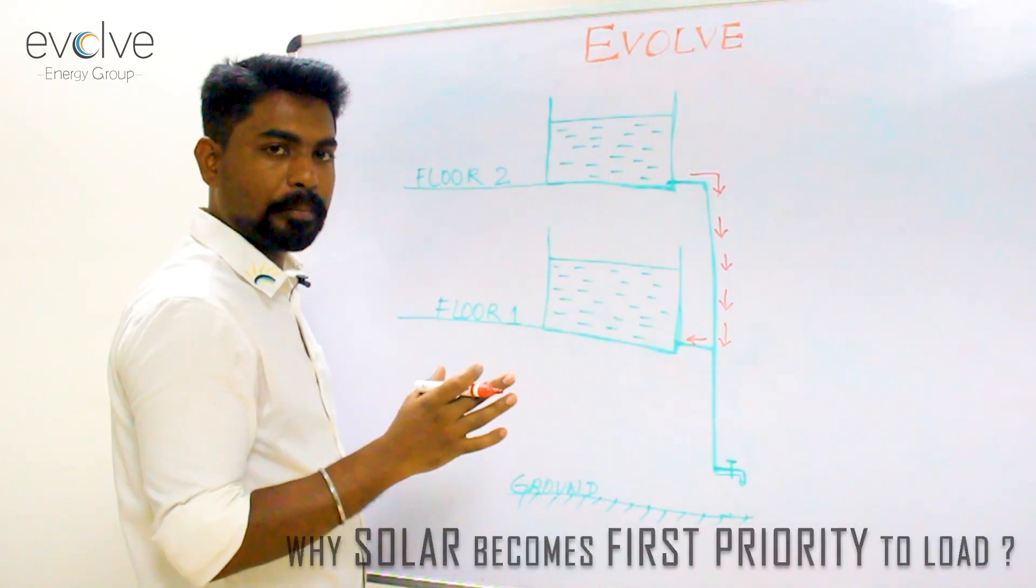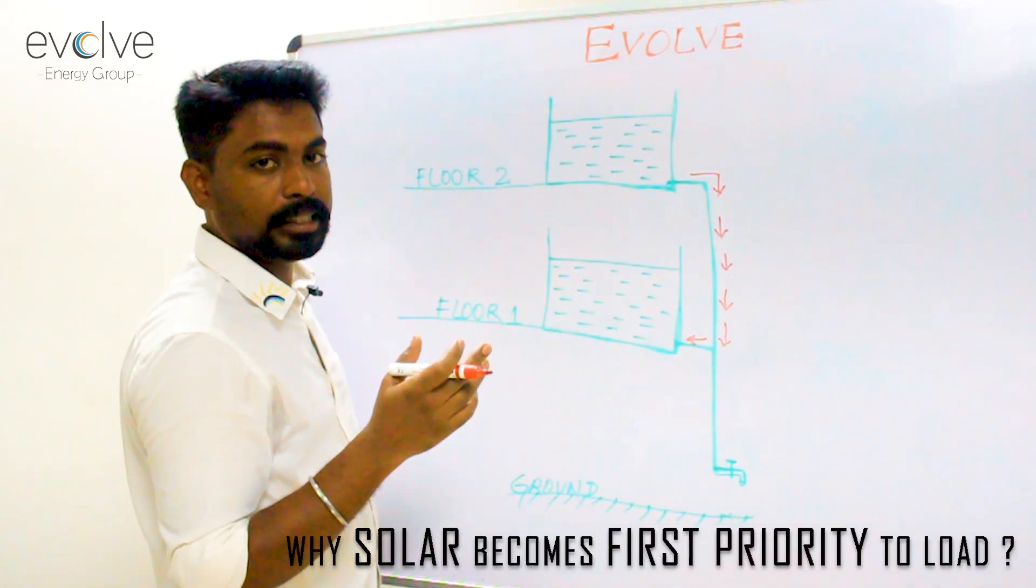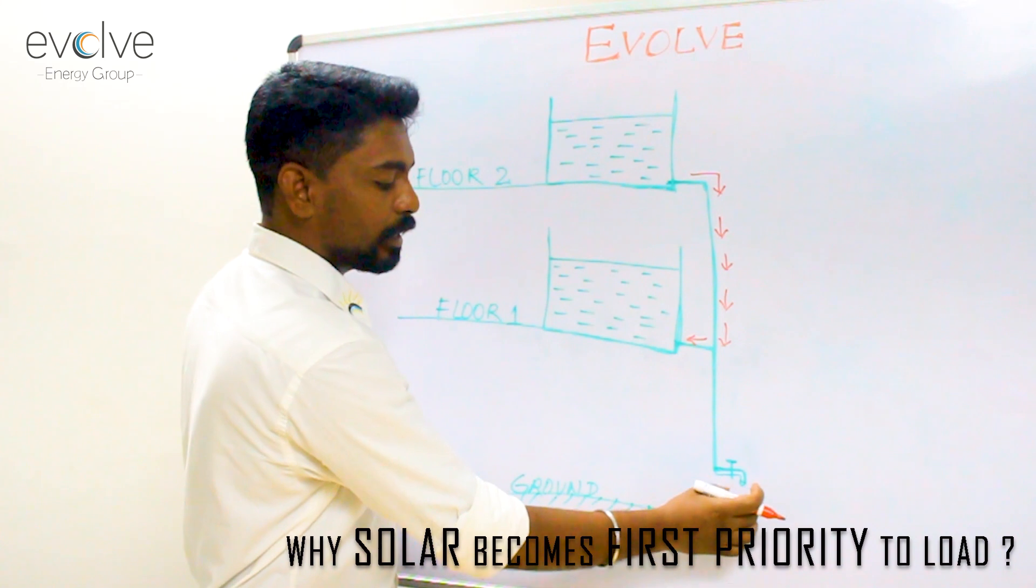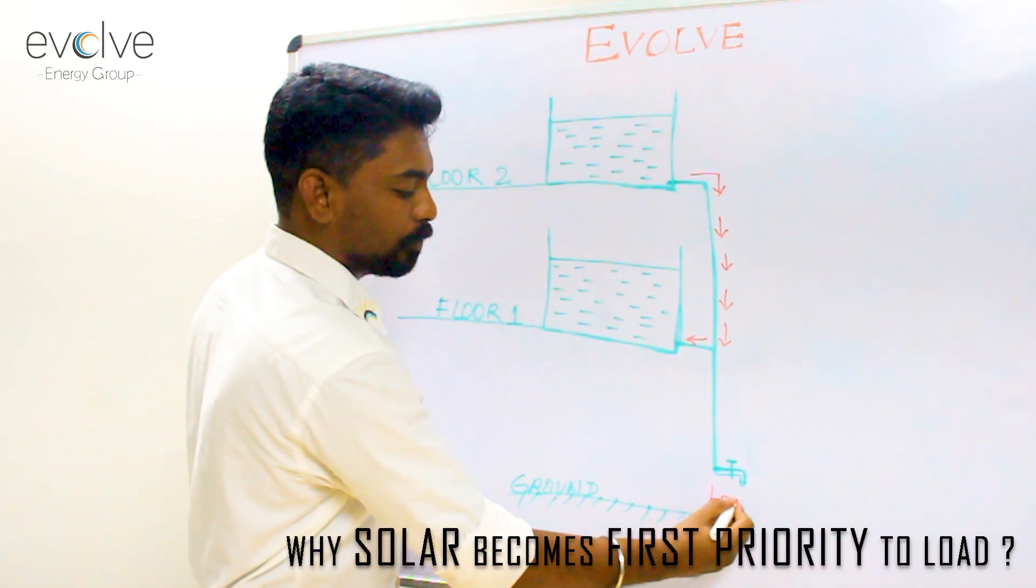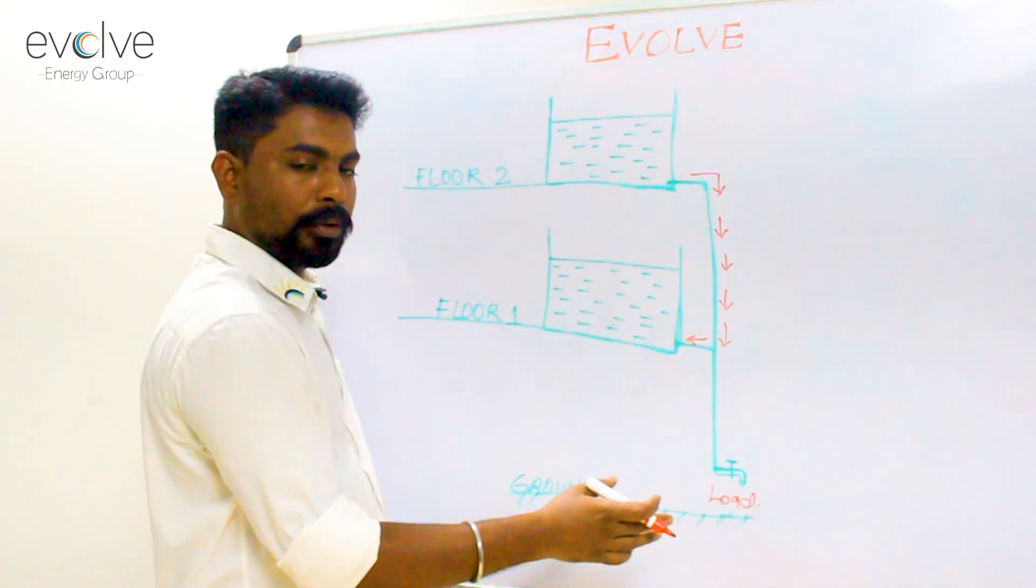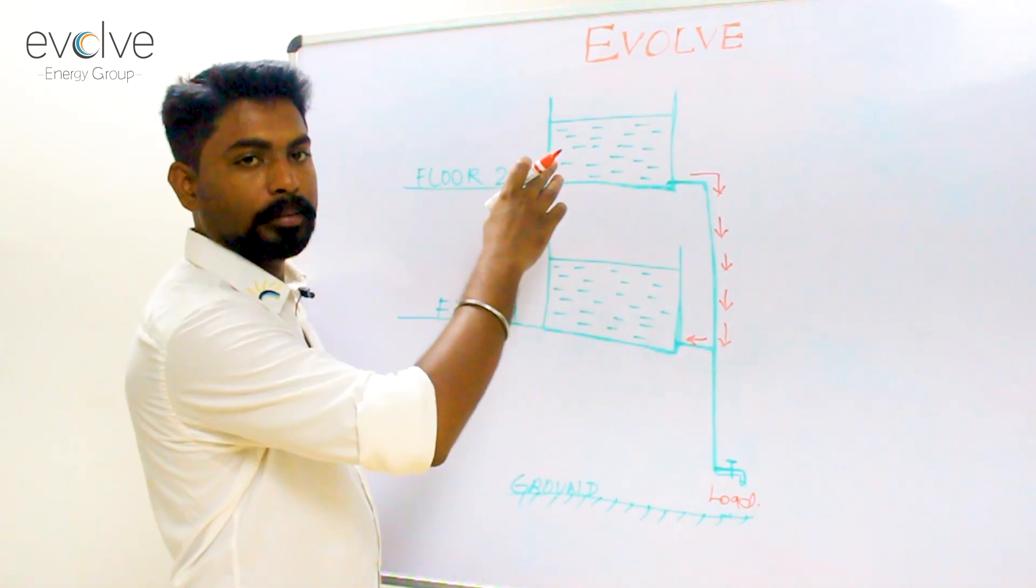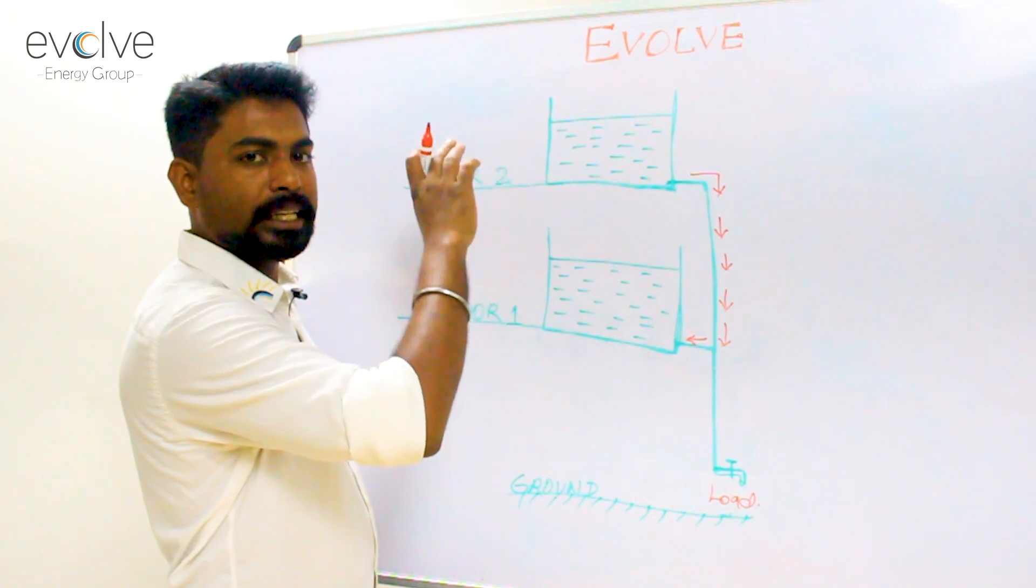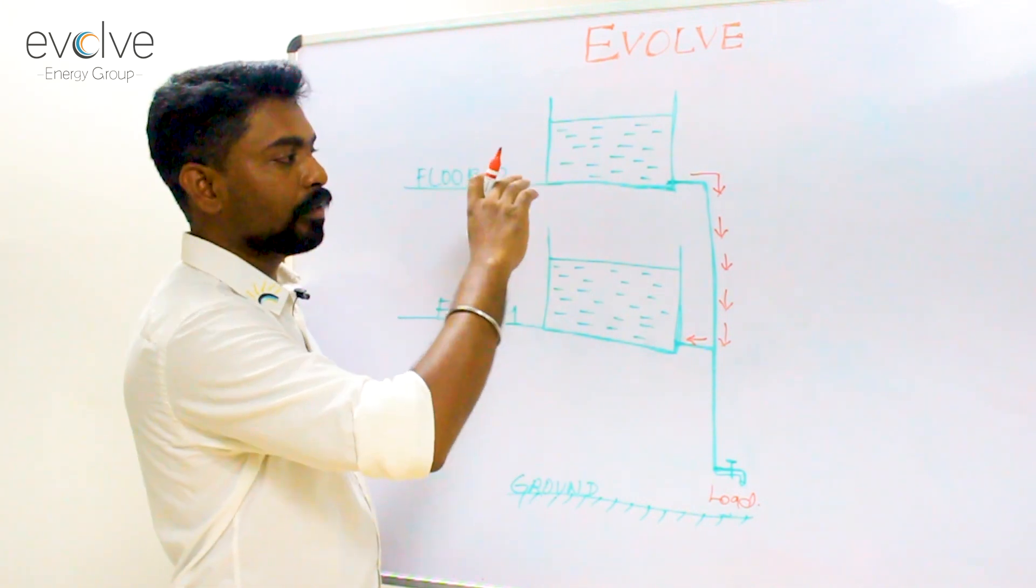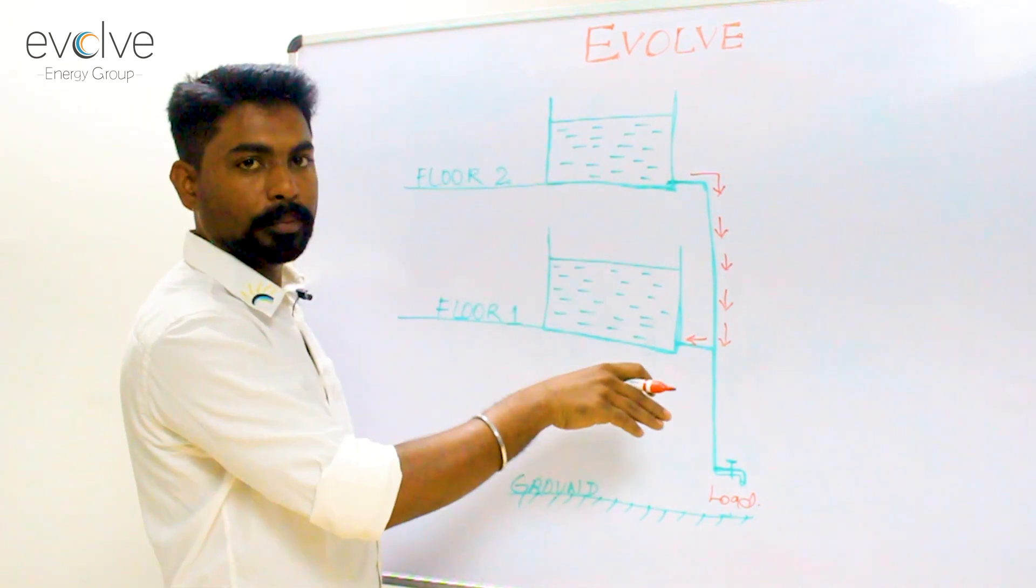The same situation is what is happening in your houses when you have an on-grid system. Consider this tap to be your load. A load is always at a lower potential than the power source and from the power source, energy always tries to push itself from a higher potential into the lower potential.